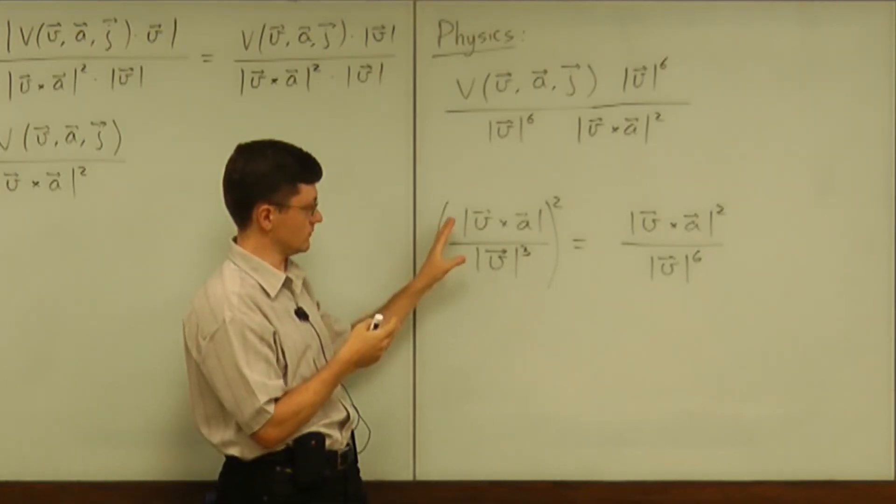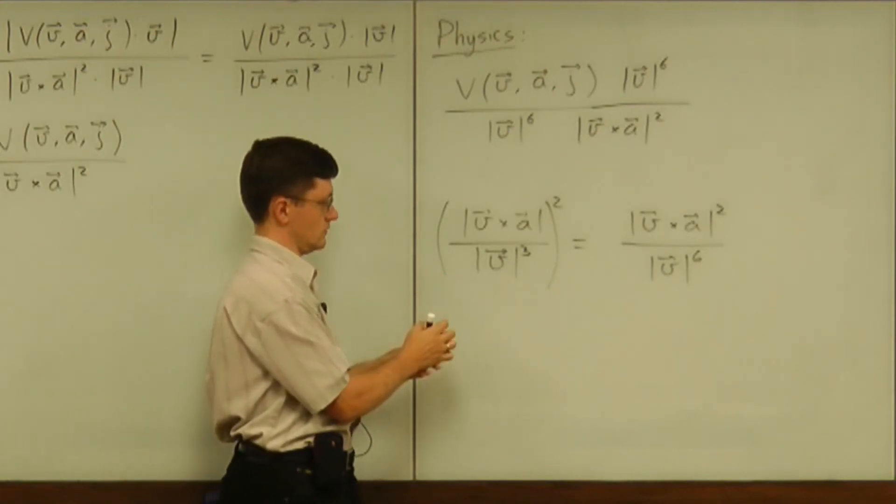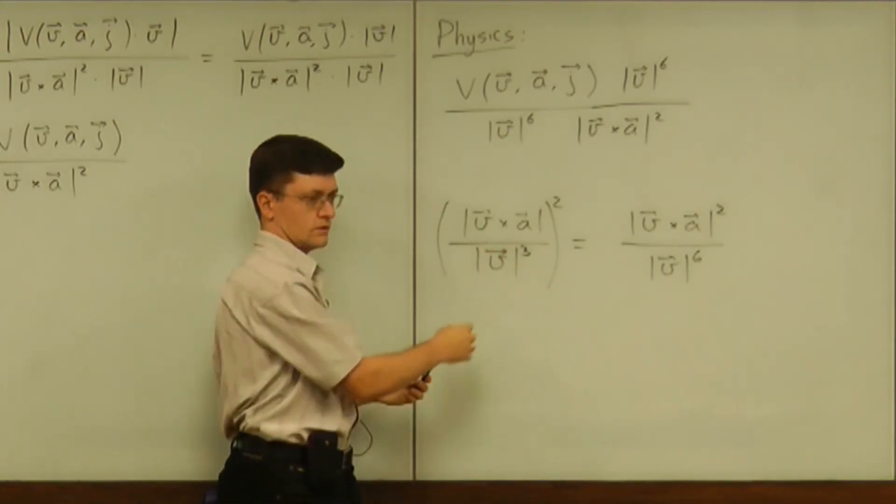In the same way as we did for the curvature, we needed to extract the geometry by dividing by that square of the speed.